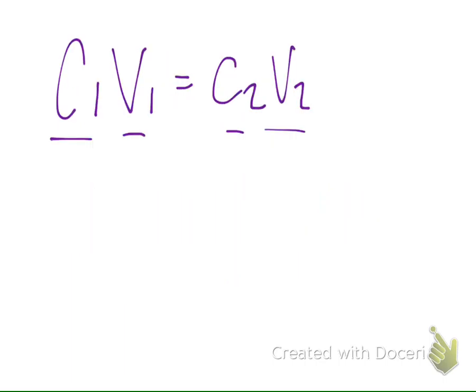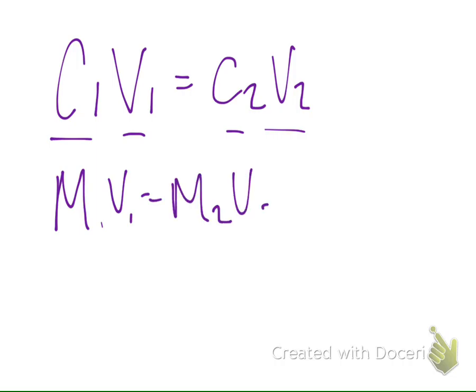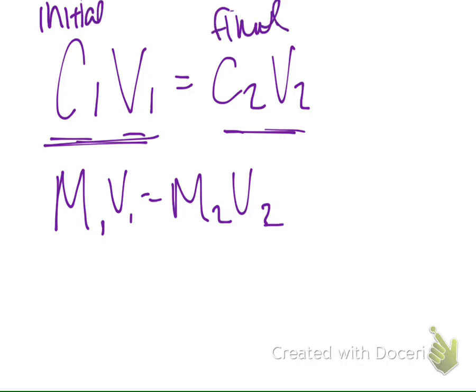C is concentration and V is volume, so sometimes you'll see it written like this: M1V1 equals M2V2. I usually use C1V1 equals C2V2, but you can see it both ways. Essentially we're going to be using molarity for those, so it doesn't really matter which way you write it. It's concentration times volume equals concentration times volume. What do you think the 1s and 2s have to do with it? Initial and final — so the 1s are the initial and these are the final. It's kind of a before and after.